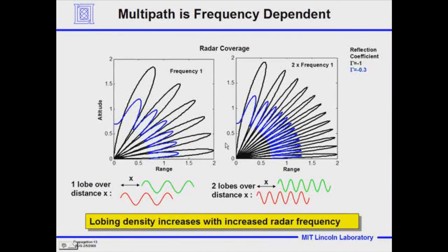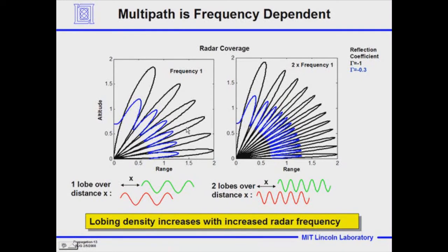Now let's look at what happens when we change the frequency. If we double the frequency, the path length difference will be doubled — there'll be two whole cycles in the same path length — and that means we'll go through a minimum and a maximum twice. So we'll have two lobes at double the frequency in the same elevation coverage where we would have one at the first frequency. If we halved the frequency, our lowest lobe would be between the first and second one. If we're very interested in detecting low altitude aircraft, the bottom of our detection beam is going to go up, and we're going to have poorer coverage when we go to lower frequencies.